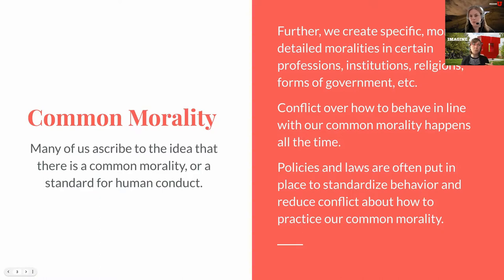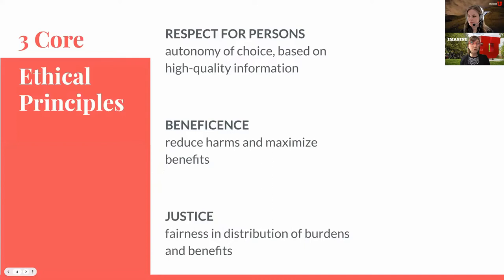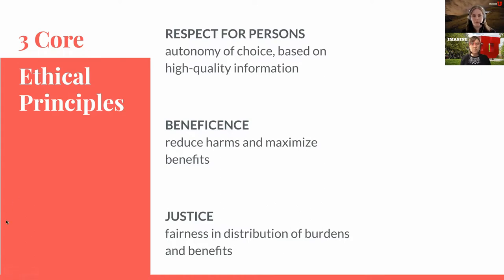Before we move on, I want to introduce the three core ethical principles we'll use today. The first is called Respect for Persons. This principle values the ability to choose — that we should have autonomy as human beings to make choices about what affects us. But the idea isn't just being able to make choices, but being able to make choices based on high quality information. You'll hear words like consent and informed consent, which wrap into respect for persons — making sure we can make good decisions for ourselves based on good information.